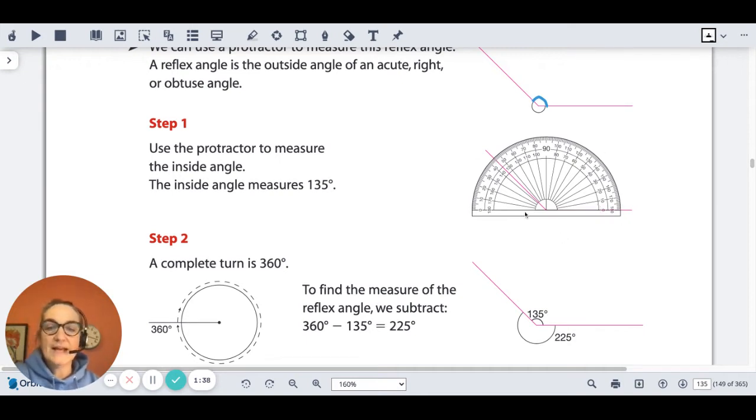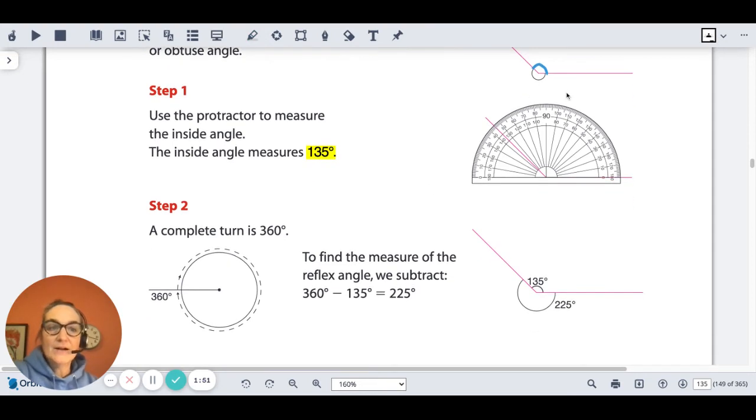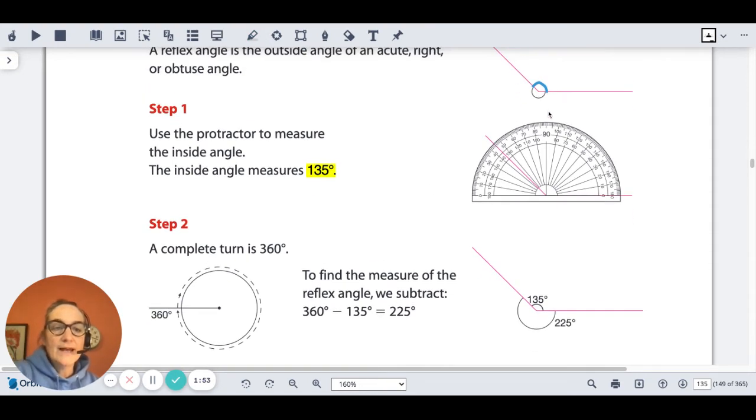The measure of that opposite angle to the one that we're asked for is 135 degrees. So now we know the opposite angle of the one that we were asked to measure is 135 degrees.